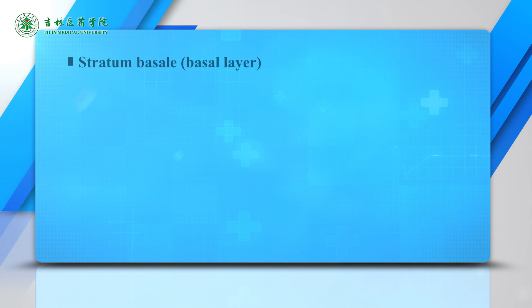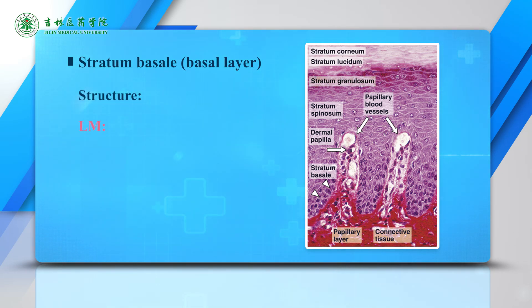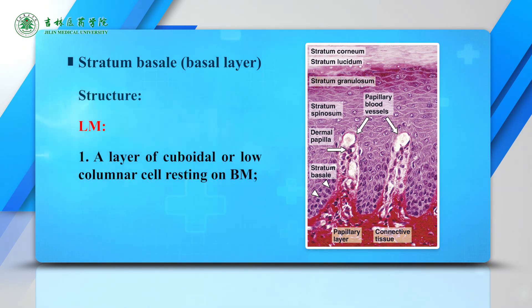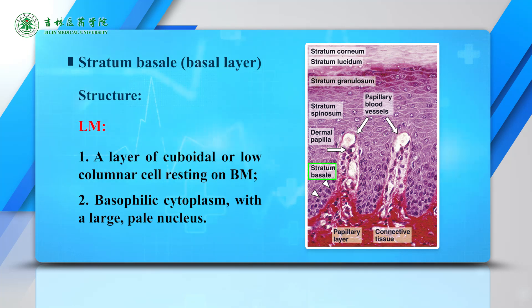The first layer is the stratum basale, also named the basal layer. By light microscopy (LM), it is a layer of cuboidal or low-columnar cells resting on the basement membrane, with basophilic cytoplasm and a large pale nucleus.